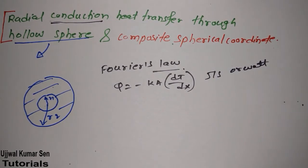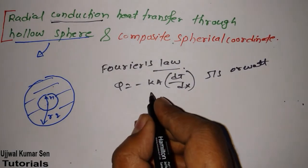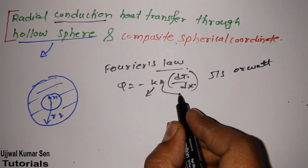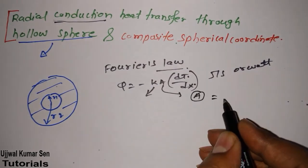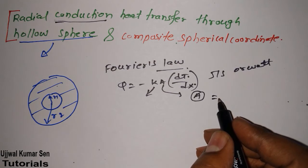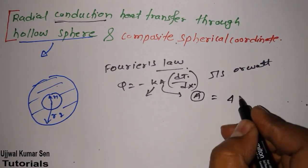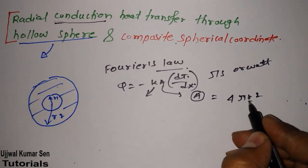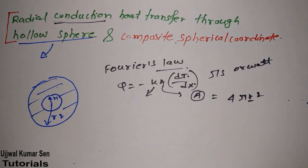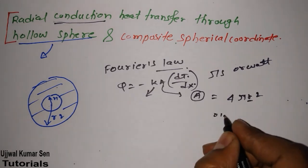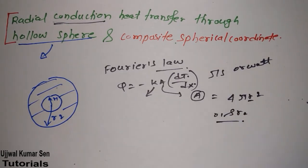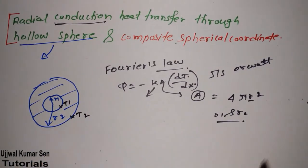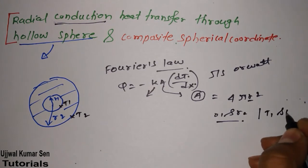We know this equation. We know k is thermal conductivity, we know dT, and for the area we know the formula for the surface area of a sphere is 4πr². We are having a hollow sphere so there are two radii: r1 and r2.